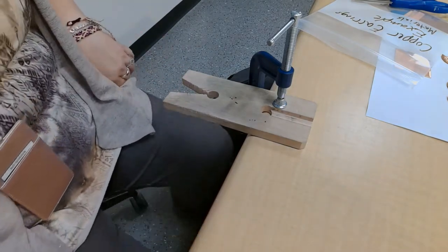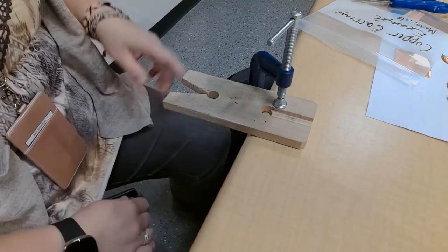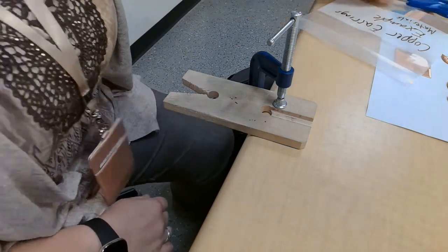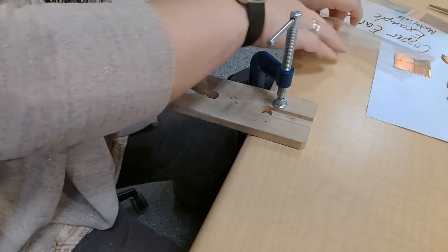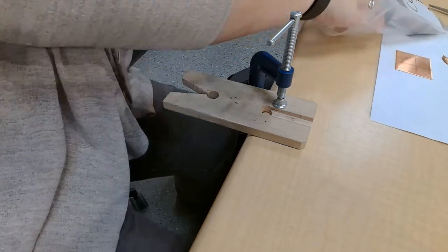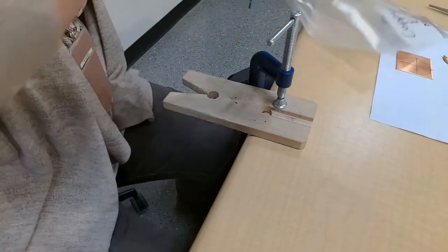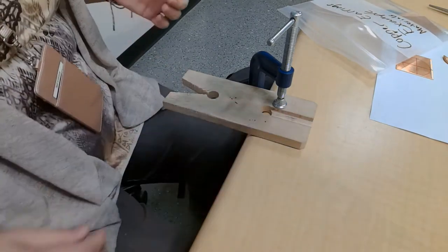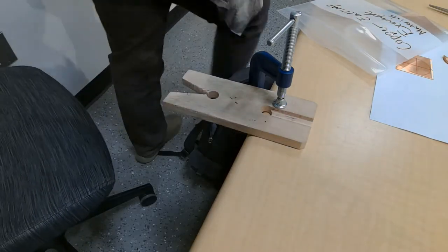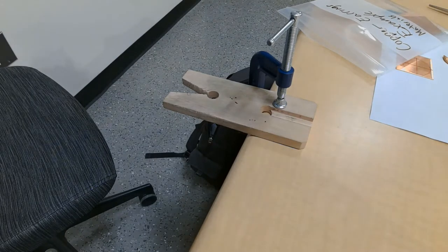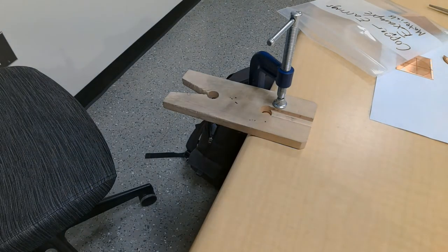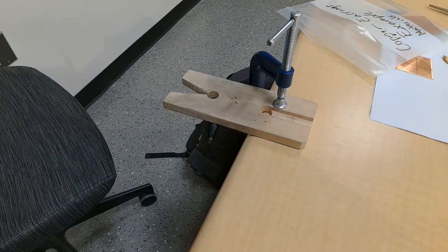The next thing that we're going to be doing is loading the jeweler's saw. You're going to take one of your saw blades, and the way the saw blade looks, there's a front, a back, a top, and a bottom to the saw blade.